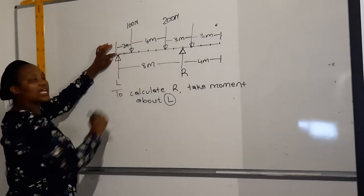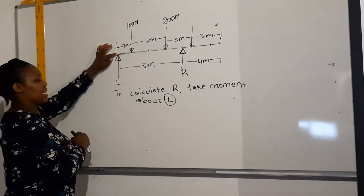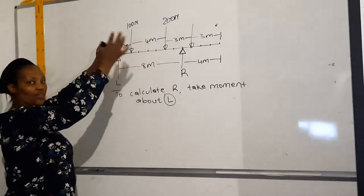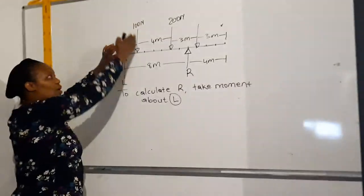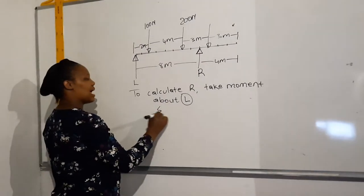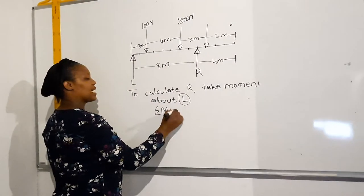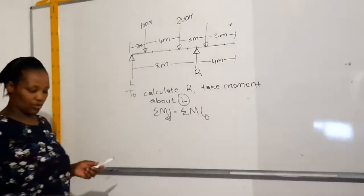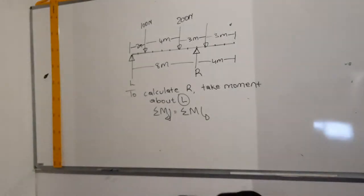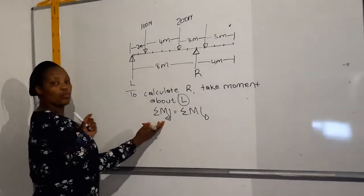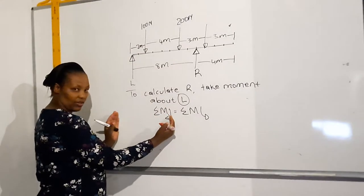Now you are going to calculate R. If you take your moments at L, you are going to use L to reference all your distances. Remember, a moment is the product of the force and the distance from the force to the pivot. Then your formula says sum of the clockwise moments are equal to sum of the anti-clockwise moments. So the next step is to go to your beam and establish which forces will give you a clockwise moment.